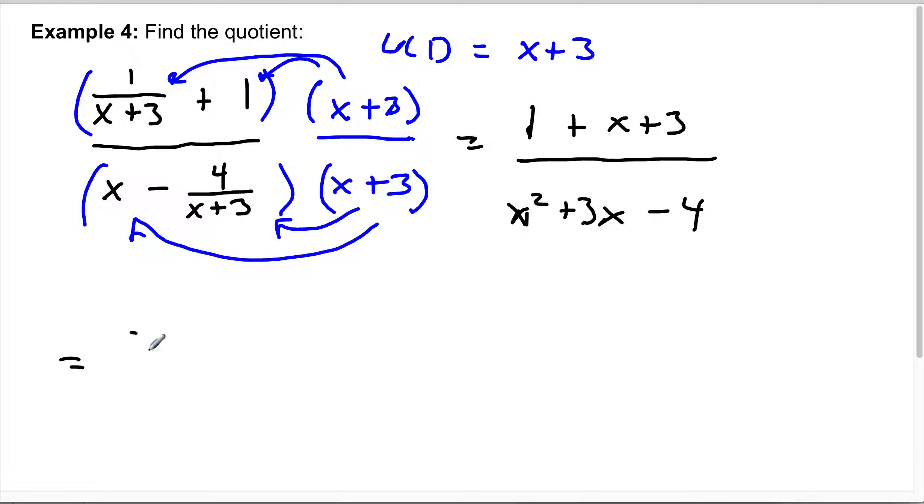Okay, so the numerator becomes x plus 4. That denominator, let's see if we can factor that. x plus... x plus... x minus 4 and 1. So positive 4, negative 1. That gives us 4 times negative 1 is negative 4. 4 plus a negative 1 is 3. So then this cancels this.